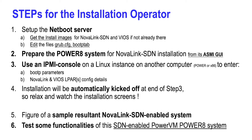Then we edit two files: grub.cfg and bootp table. In step 2, we prepare the Power8 system for the installation from the ASMI GUI. In step 3, we use an IPMI console to enter installation details such as bootp parameters and parameters for NovaLink and VIOS.